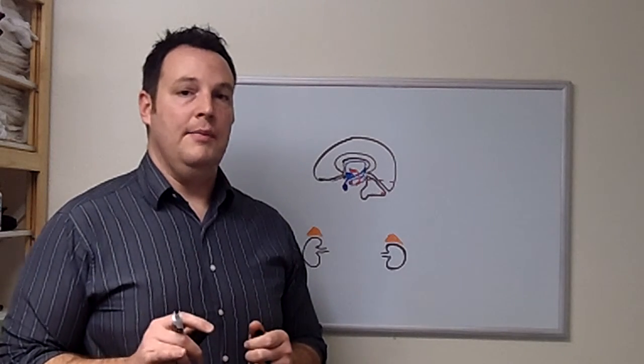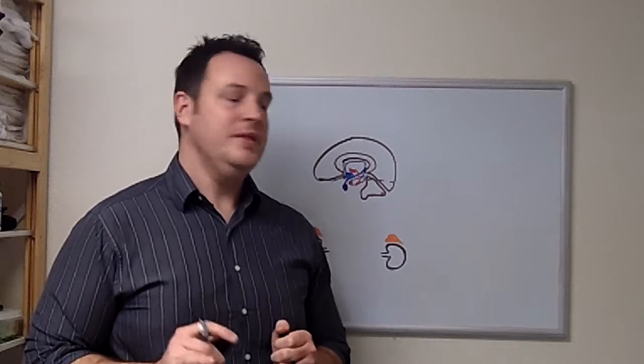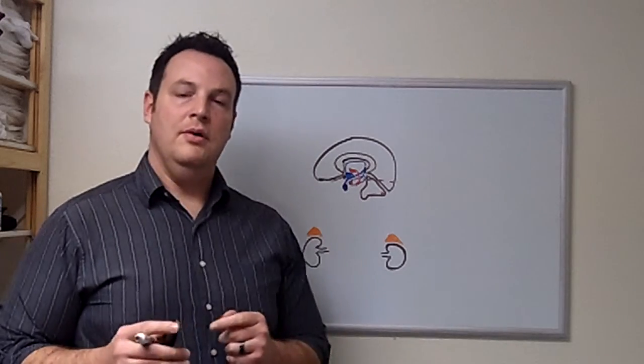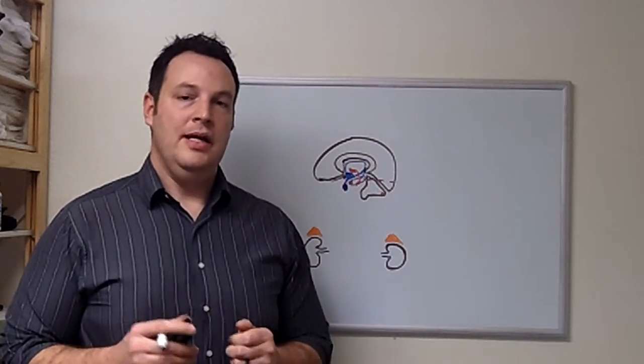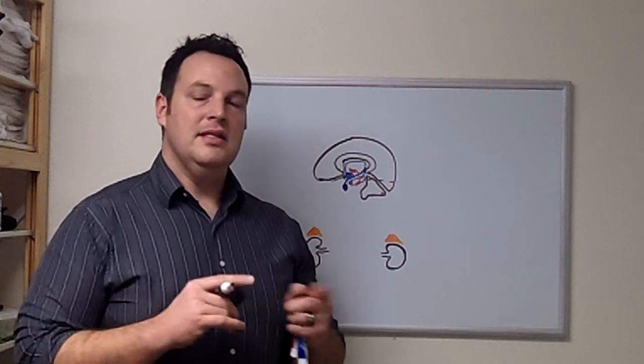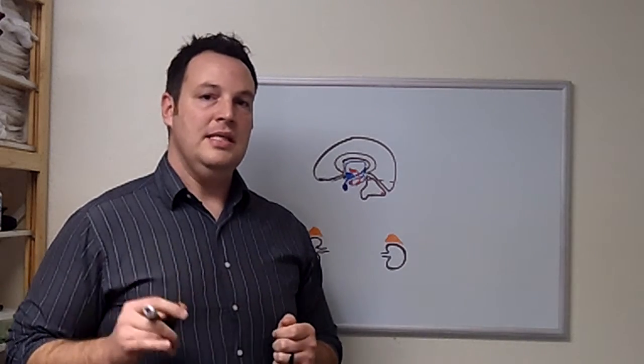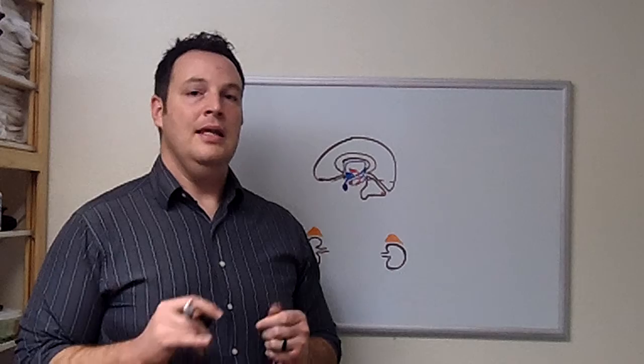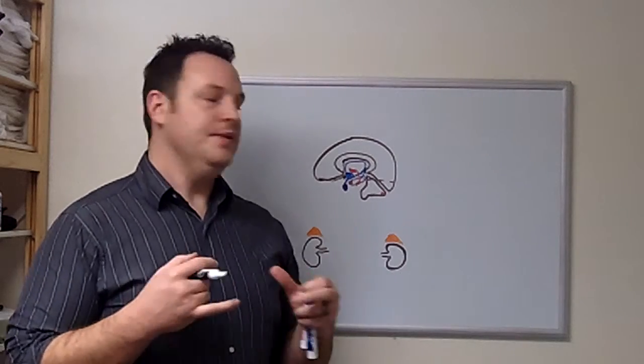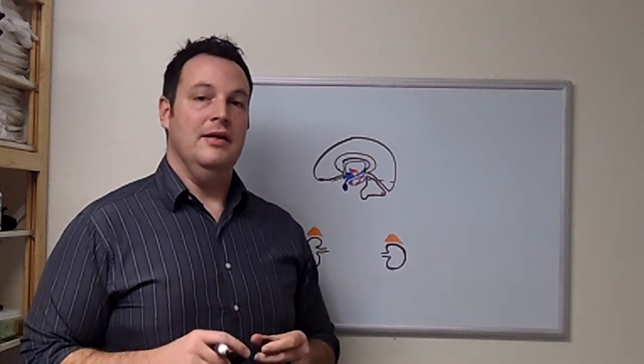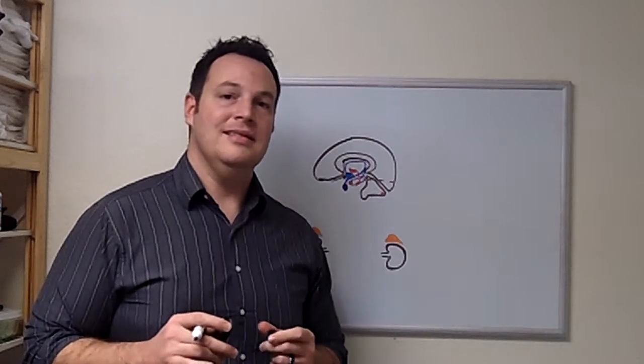The posterior pituitary secretes a couple things, vasopressin and oxytocin. But we're going to focus more so on the anterior pituitary and the HPA axis. Again, this could be applied to HPT, HP gonad, but it has influence. The main one is the HPA axis here, and that can influence all of our other axes.